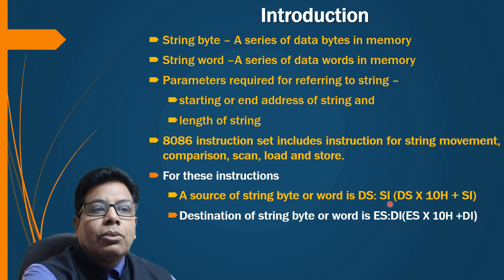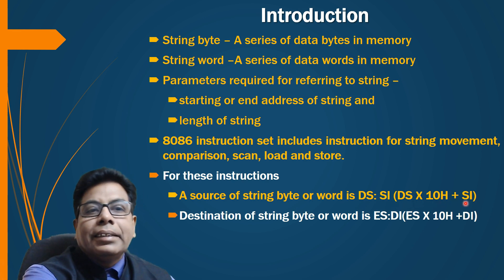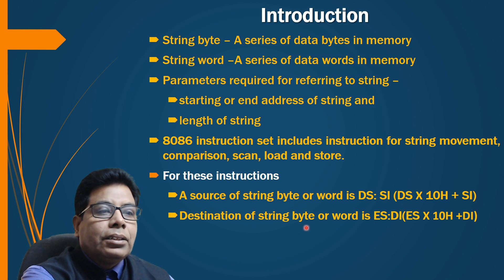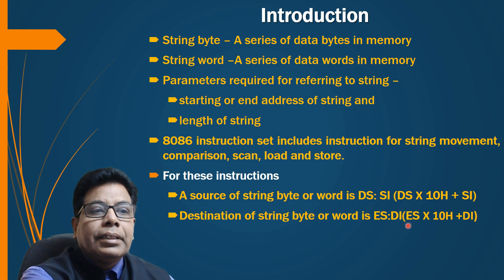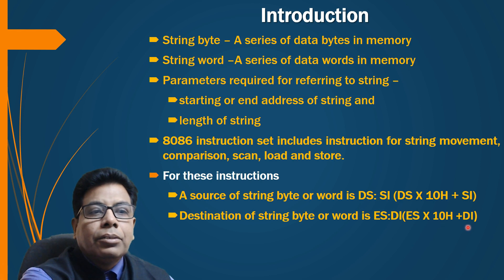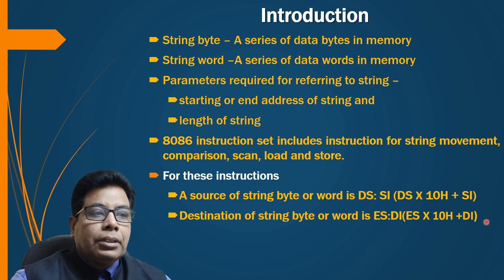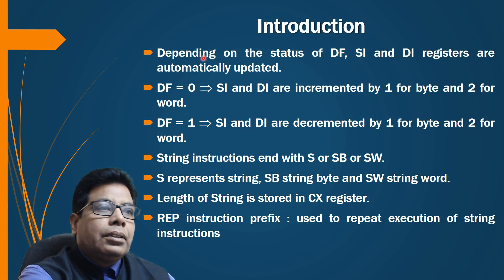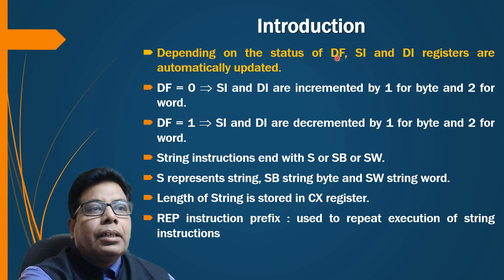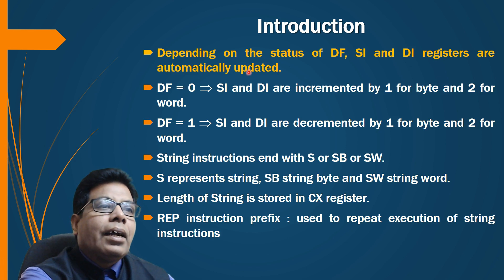The physical address of the source is calculated as DS multiplied by 10h plus SI. Similarly, the destination of a string byte or word is ES:DI — the extra segment is used for the destination and the data segment for the source. The physical address of the destination is ES × 10h + DI. Depending on the status of the direction flag, SI and DI registers are automatically updated.